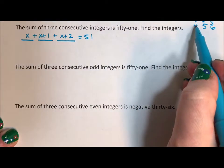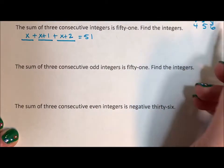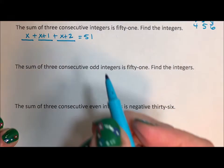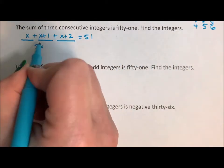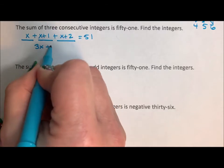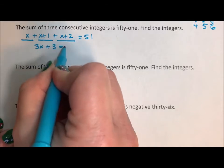So four, four plus one, four plus two, x, x plus one, x plus two. There are three x's plus three, equaling 51.